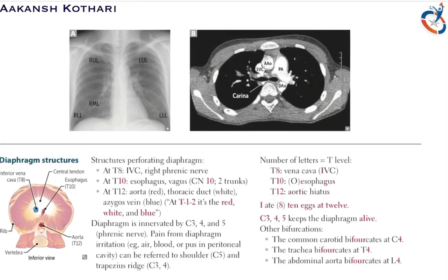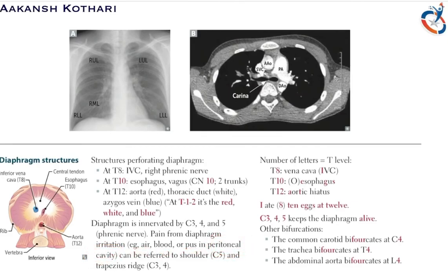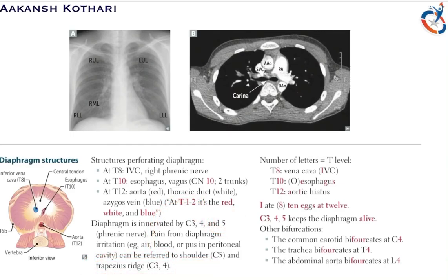The diaphragm is innervated by C3, C4, and C5 via the phrenic nerve. Irritation of the diaphragm — for example from air, blood, or pus in the peritoneal cavity — can refer pain to the shoulders due to C5, and to the trapezius ridge due to C3 and C4.